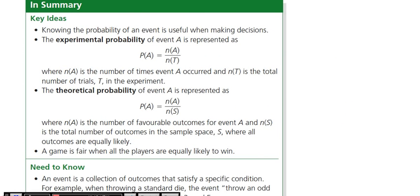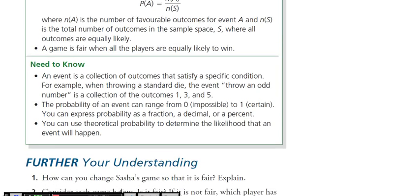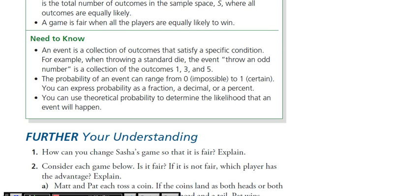An event is a collection of outcomes that satisfy a specific condition. For example, when throwing a standard die, the event 'throw an odd number' is a collection of outcomes one, three, and five. The probability of an event can range from zero (impossible) to one (certain). You can't be over one — if you ever get a probability greater than one, you're going to get that question wrong.